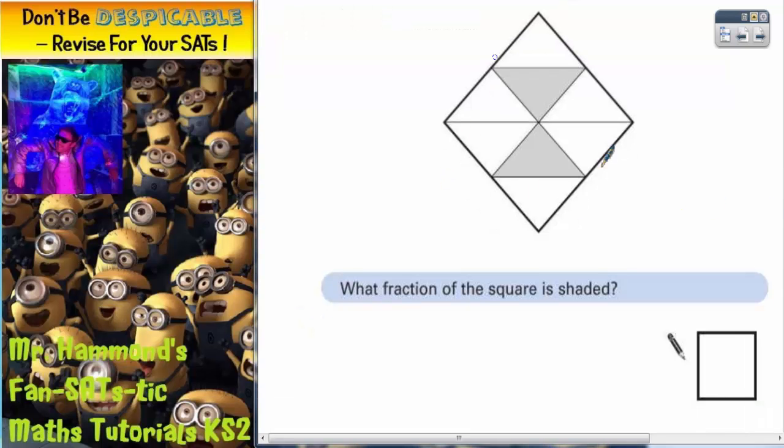This square has been rotated so that it's standing on one of its corners and split up into triangles. Fortunately, all of the triangles are the same size, so this should be nice and easy.